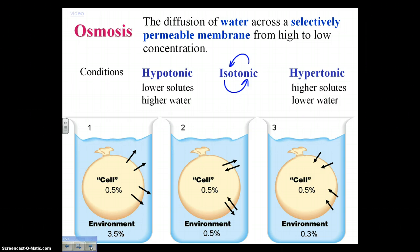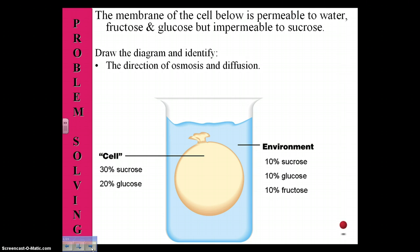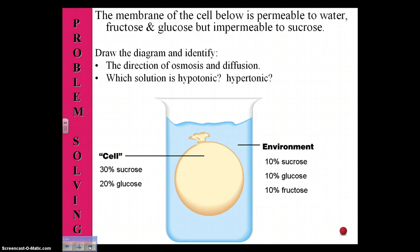If you think you understand this and can deal with those terms, consider this particular cell. Here we have a cell with 30% sucrose and 20% glucose, with an environment of 10% sucrose, glucose, and fructose respectively. The membrane is permeable to water, fructose, and glucose, but is not permeable to sucrose. In your notes, draw this cell with the concentrations, then identify the direction of osmosis and diffusion. Then identify which solution is hypotonic and which is hypertonic, and finally, identify which solute diffuses into and which diffuses out of the cell.